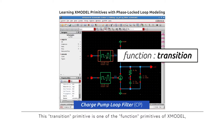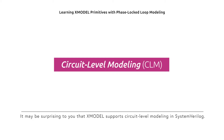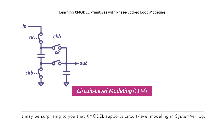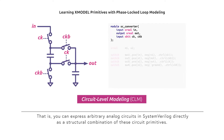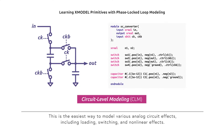The transition primitive is one of the function primitives of X-Model, which translates a digital input to an analog output — in this case, the current level of the ISource primitive. It may be surprising that X-Model supports circuit-level modeling in SystemVerilog. You can express arbitrary analog circuits in SystemVerilog directly as a structural combination of these circuit primitives. This is the easiest way to model various analog circuit effects, including loading, switching, and nonlinear effects.